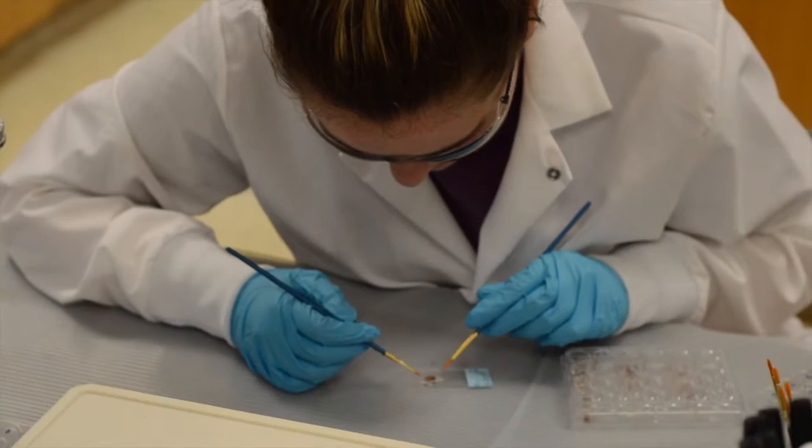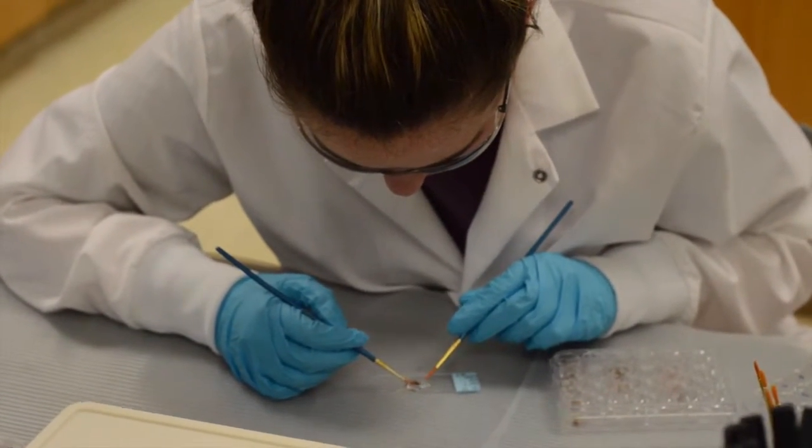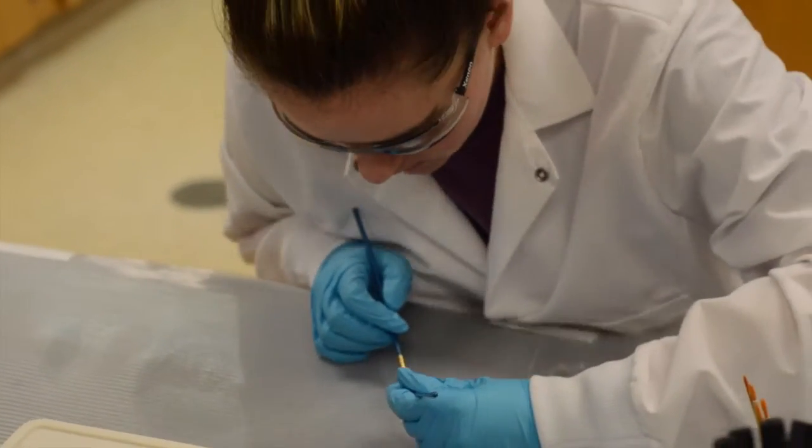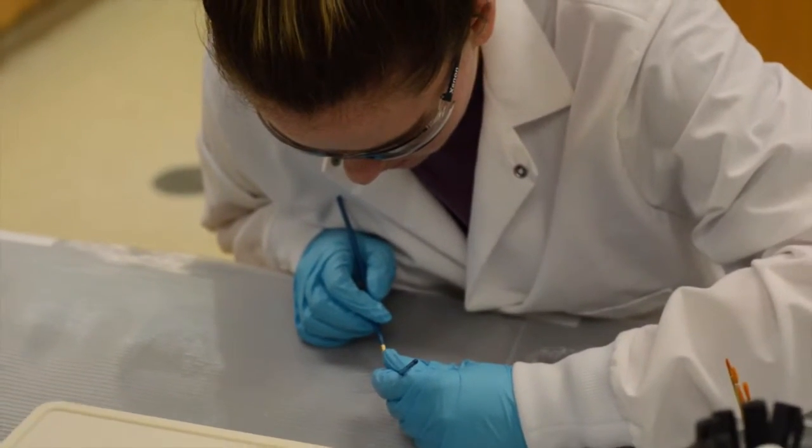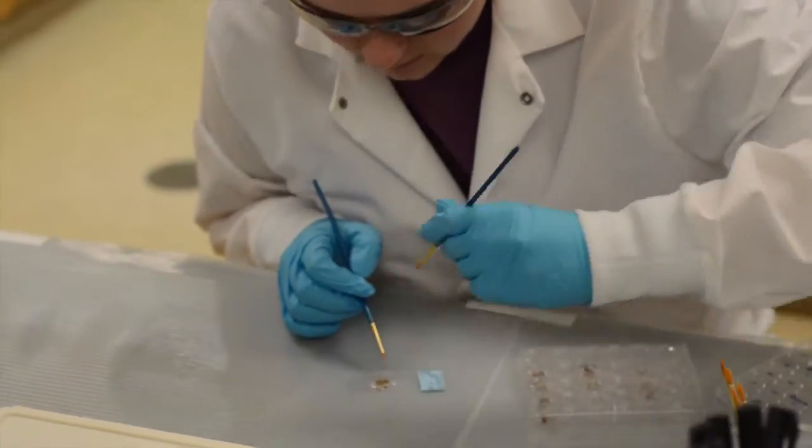Use a paintbrush to aid in this process. Once the slide is ready, remove the water, add a drop of permount, and cover the microscope slide with a cover slip. Store the slide in a slide box for further analysis.